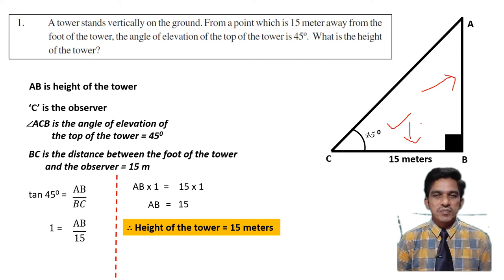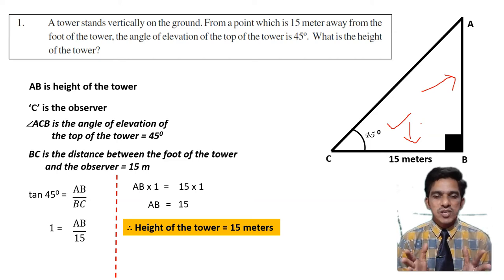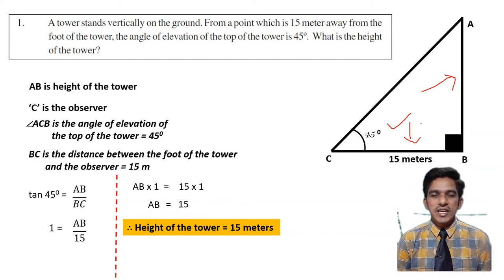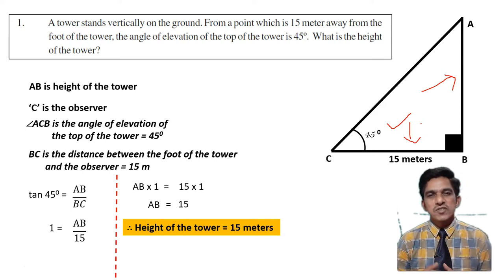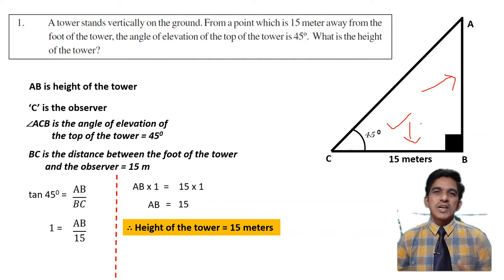An important point: in a right angle triangle, if one angle is 45 degrees, then automatically the other angle is also 45 degrees, and that triangle is isosceles. In an isosceles right angle triangle, the two sides other than the hypotenuse are equal — the opposite side and adjacent side will be equal. So in problems where the angle of elevation or angle of depression is 45 degrees, if the distance between the foot of the tower and observer is 15 meters, then the height of the tower is also 15 meters, because they are equal.